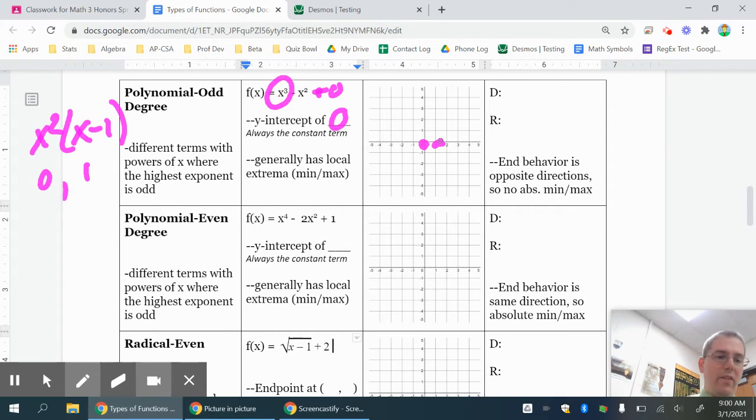Now, since this has a square on it, I know that this has a multiplicity of two. That means it's going to kind of bounce at that point, and then it's going to turn around and go back through.